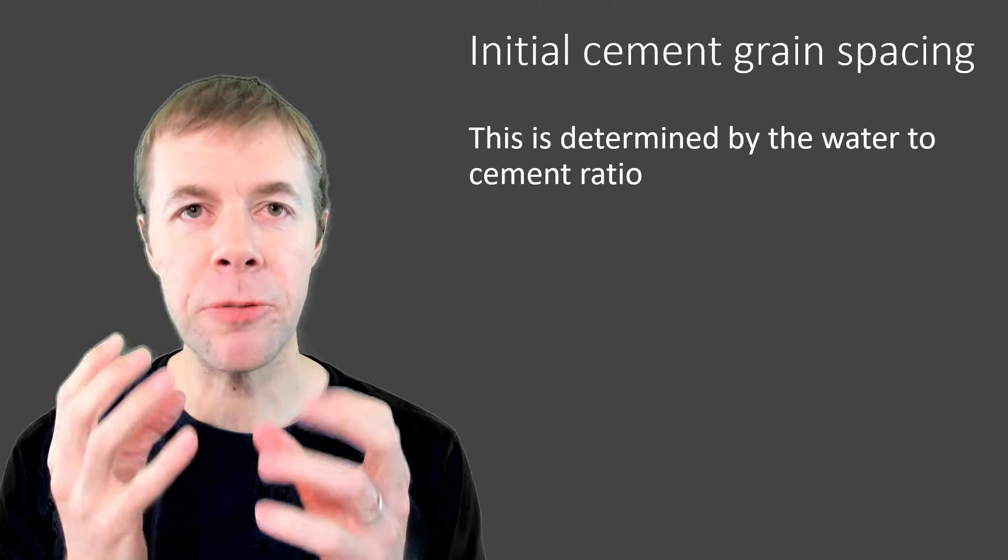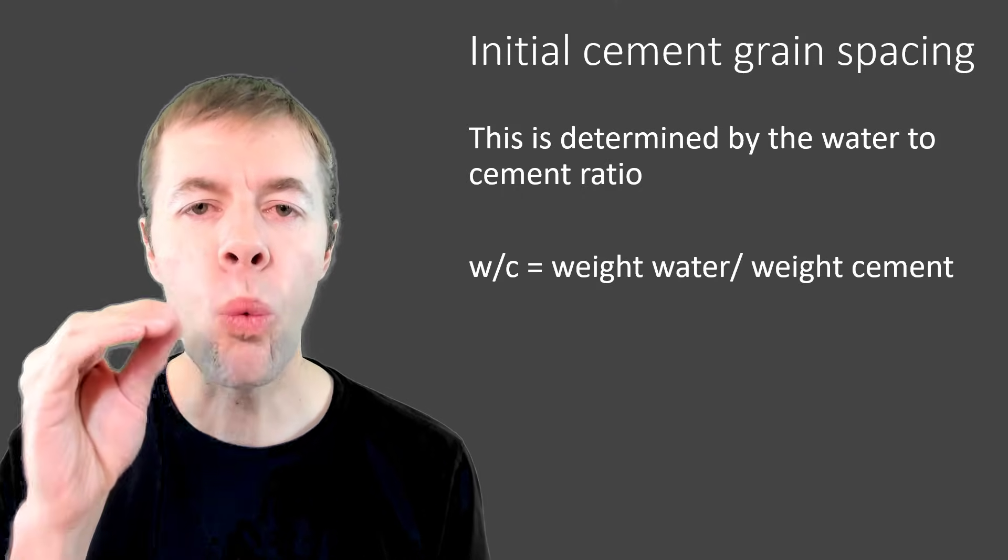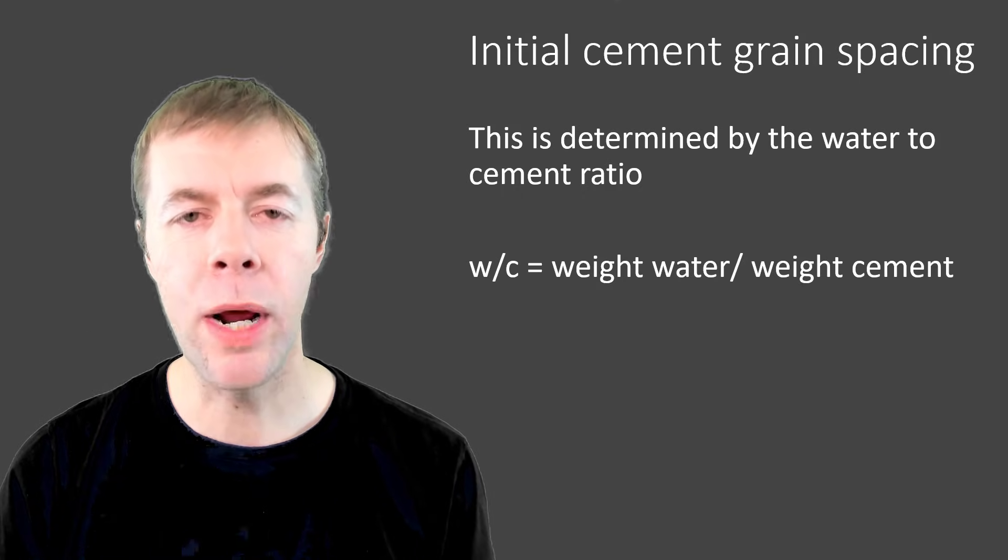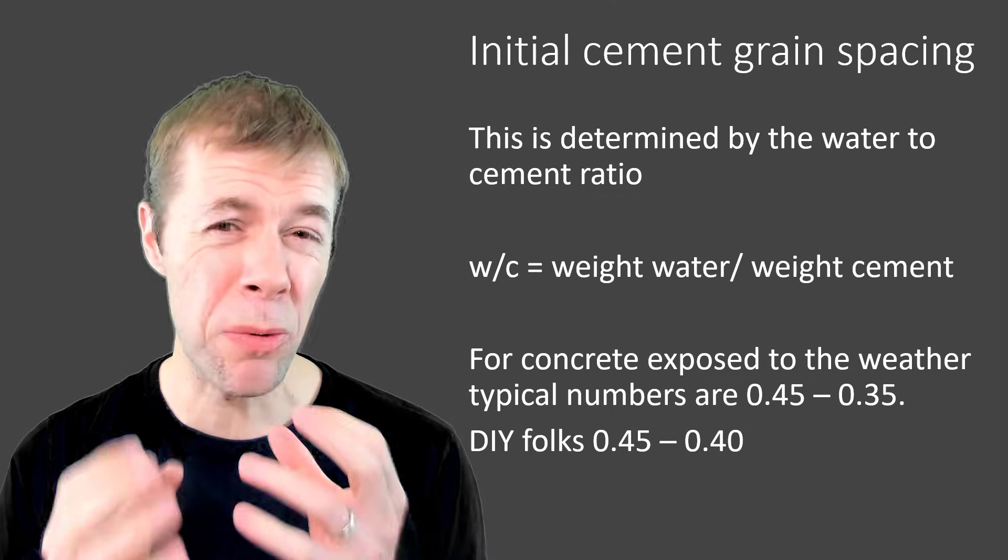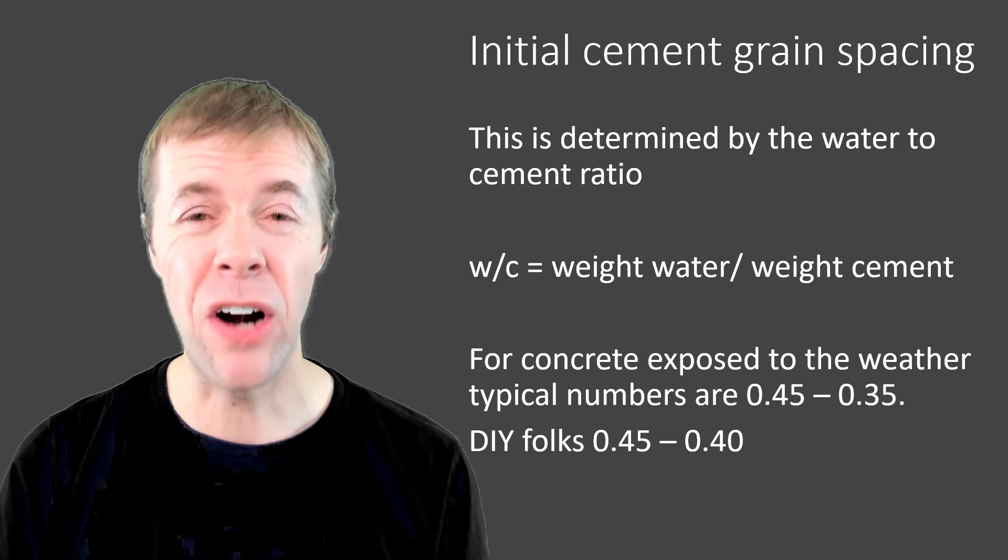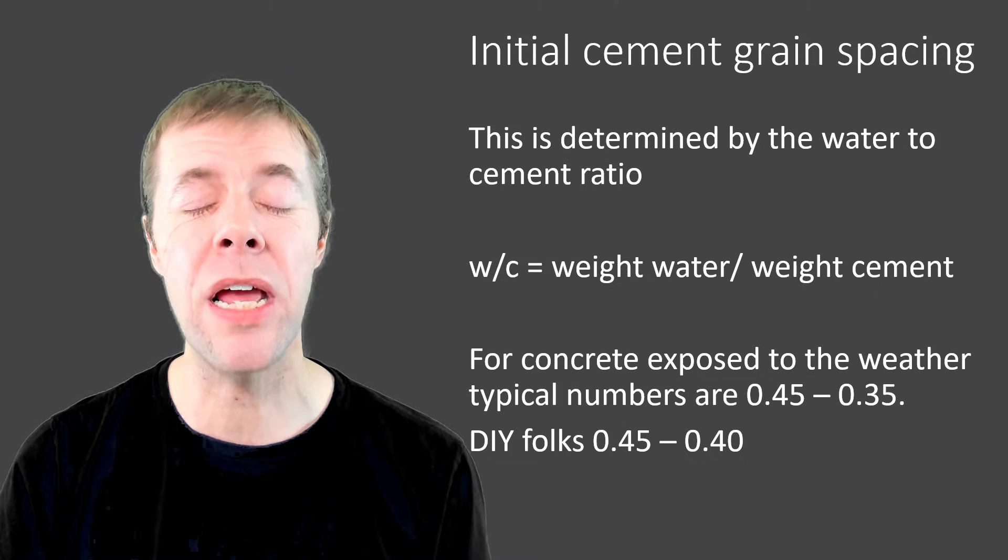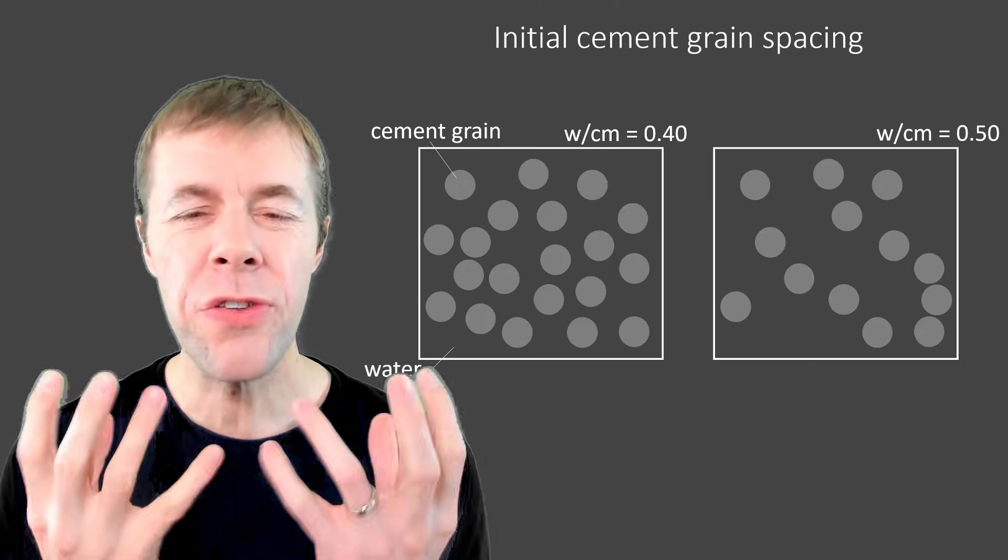Now the initial cement spacing is all about something called the water to cement ratio. This is the weight of the water divided by the weight of cement. For typical concrete exposed to extreme weather, that's anywhere between 0.45 and 0.35. For my DIYers out there, you can typically easily achieve a 0.40 to 0.45 water cement ratio. So this is what it's all about.